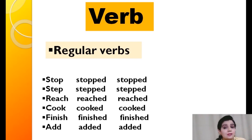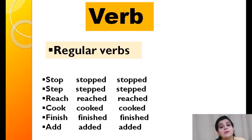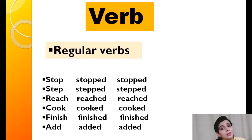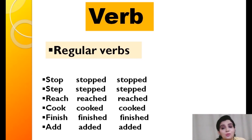Since the second and third forms of regular verbs are the same, some students may be confused about how to identify which form is used in a sentence. The simple rule is: if it is the third form, then has, have, or had must appear before it. The second form can be written without these auxiliaries. The first form indicates present tense, the second form is always used in past tense, and the third form is used with has, have, or had. Regular verbs are those whose second and third form are the same and are formed by adding 'ed'.